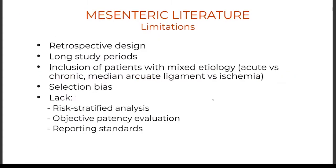There are significant problems with the mesenteric literature: all papers are retrospective and many required over two decades to accumulate a decent patient number; there is often inclusion of mixed etiologies such as acute and chronic or even median arcuate ligament; there is a huge selection bias toward one therapy or the other; and there is a lack of risk-stratified outcomes or objective patency evaluation in most papers.